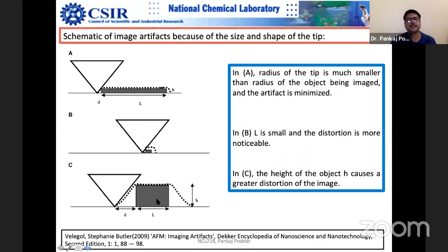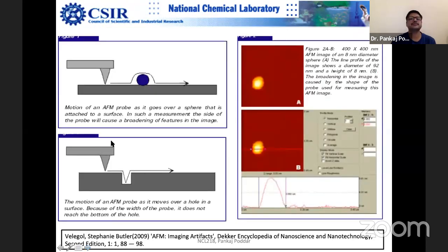One should have a rough estimate of the height of the object being measured — it should not be too large relative to the probe. Otherwise you will have a problem with the sidewall interaction. Another example: if you have a deep rectangular pit, you can see that you almost touch the bottom, but the sidewalls are not imaged rectangularly — instead you see a triangular pit. Similarly, for a spherical particle, the height is measured nicely but the lateral dimensions are broadened.